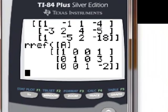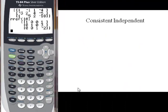I can tell I have a consistent unique solution because of the ones across the diagonal. In fact, what this tells me is that x equals 1, y equals 3, and z equals negative 2. So I have a consistent independent matrix with a unique solution.